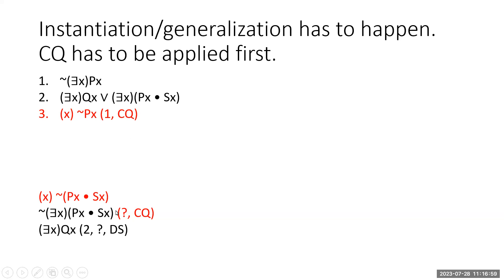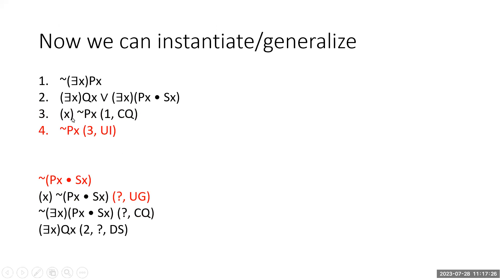And then back here, we can get it's not the case that something is P and S from saying it is true of everything that it's not both P and S. So we're working backwards from our conclusion at the same time as we're working forwards from our premises. And in between here, we're going to get this stuff out of quantifiers so we can use implication rules.